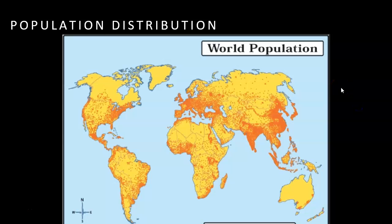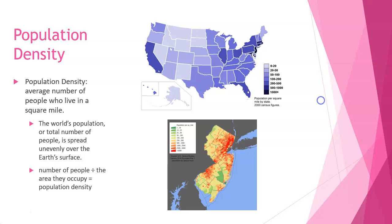This is a population distribution map. The difference from population distribution is population density. Population density can be misleading — it's just the average number of people who live in an area, calculated by taking the number of people divided by the number of square miles. That gives you population density. Here on this map of the United States, New Jersey's population density is a thousand people per square mile.